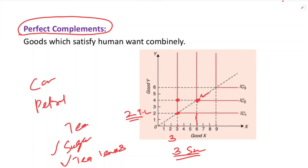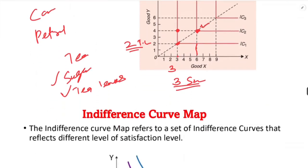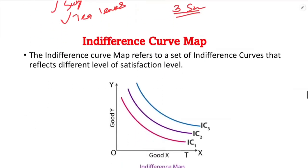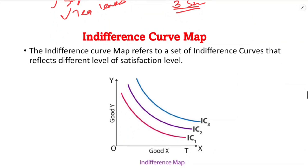So this is an exception to the typical indifference curve shape. Both cases — perfect substitutes and perfect complements — are exceptions. An indifference curve map refers to a set of indifference curves that reflects different levels of satisfaction, where a higher indifference curve corresponds to a higher level.